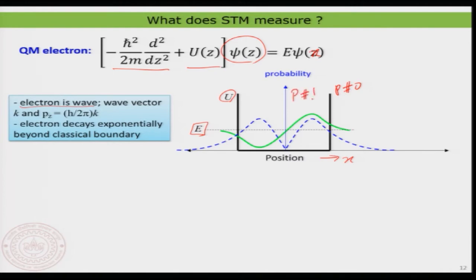There is actually a finite value for the probability outside, and the probability inside is not equal to 1. That means the electron defined inside the box is not just there all the time — it is also present elsewhere.